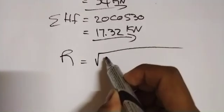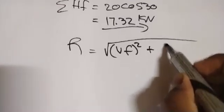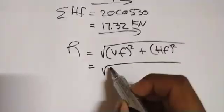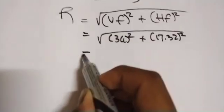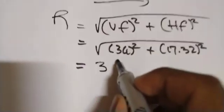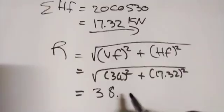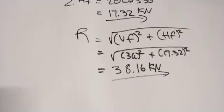Now let us calculate the resultant force of these two forces. That will be the square root of the vertical force squared plus the horizontal force squared: √(34² + 17.32²), which leaves us with 38.16 kilonewtons. That is the resultant force of these two forces.